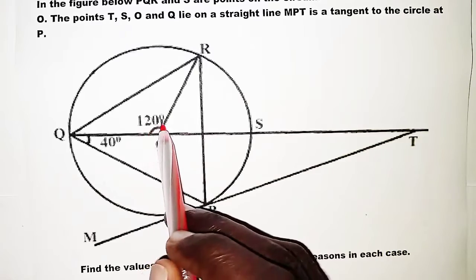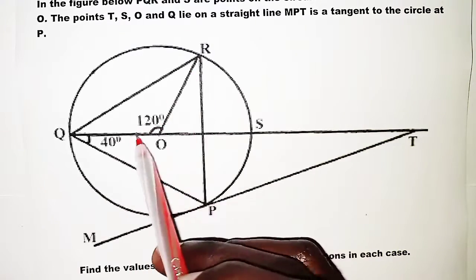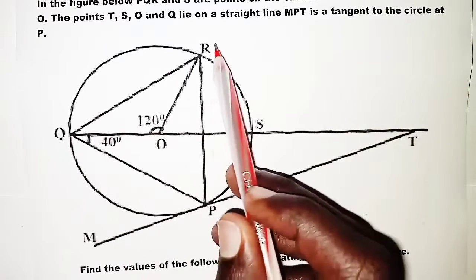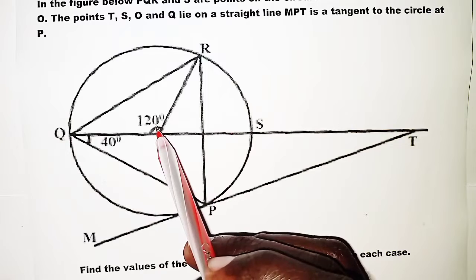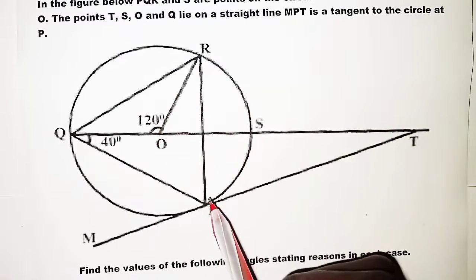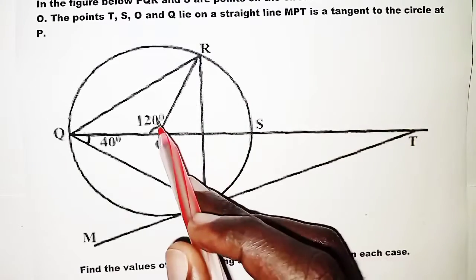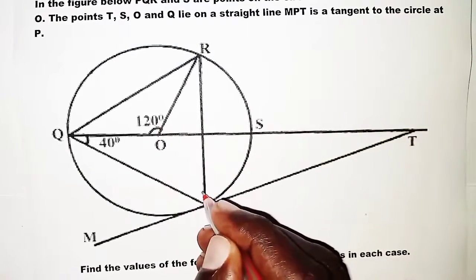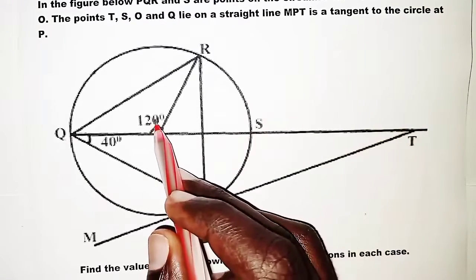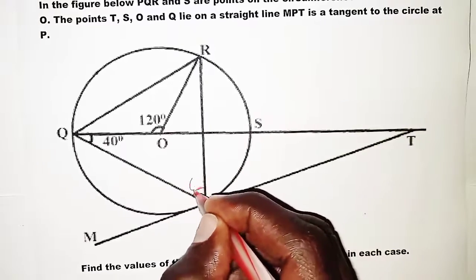We use what we're given to find what is missing. The angle subtended at the center by chord QR is 120°. The angle subtended at the circumference by the same chord should be half the angle at the center, so that angle should be half of 120°, which gives us 60°.